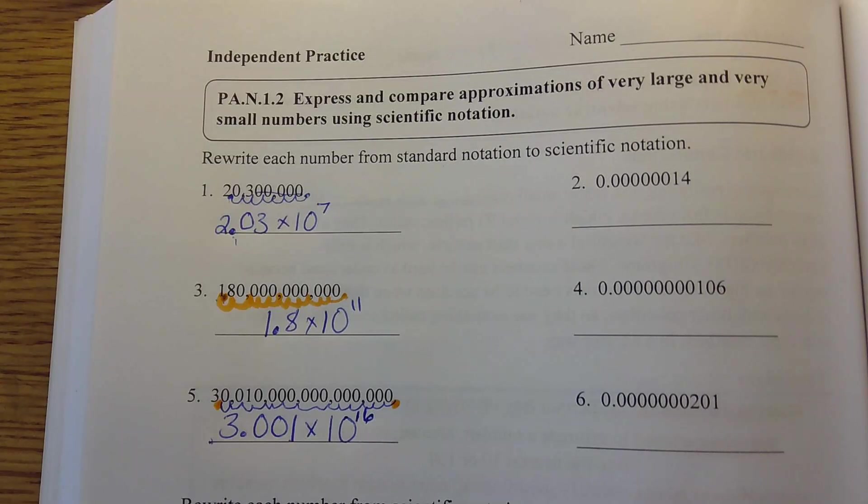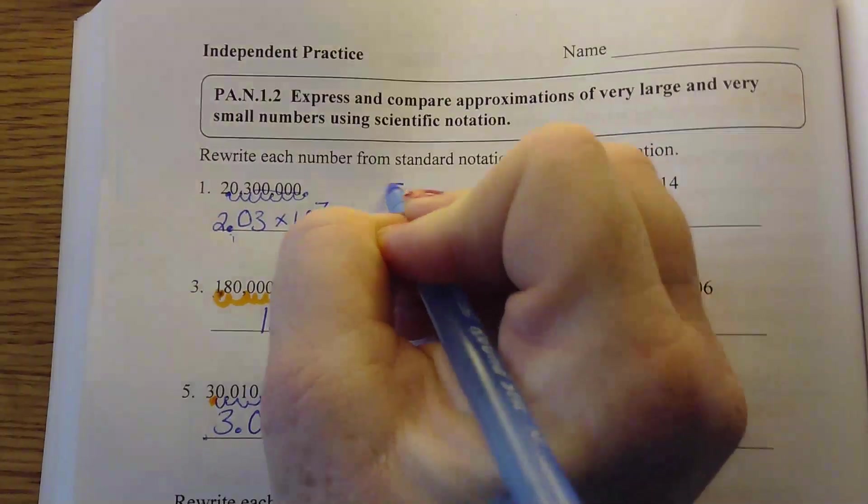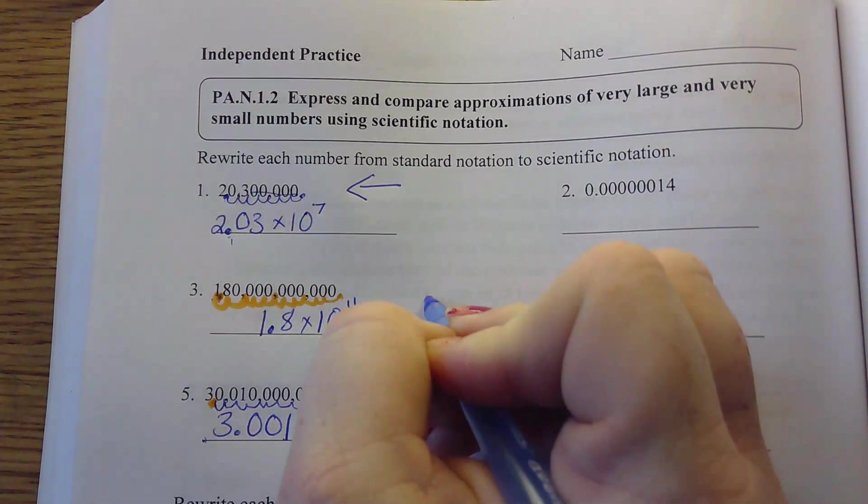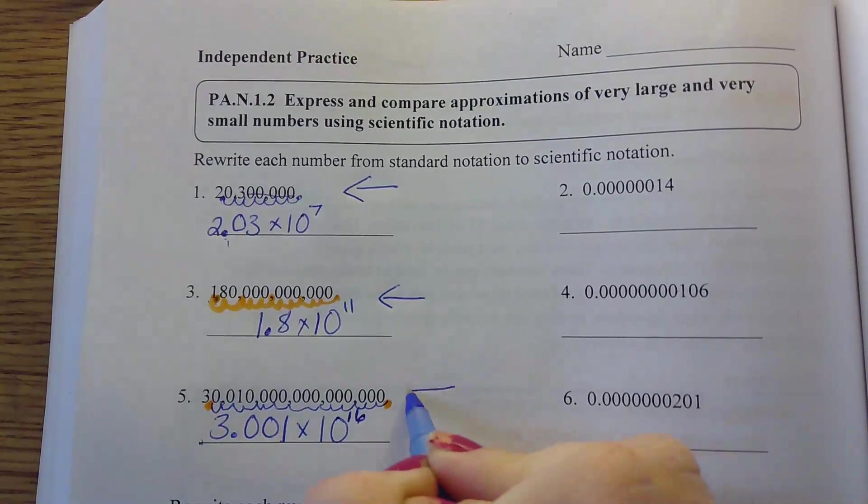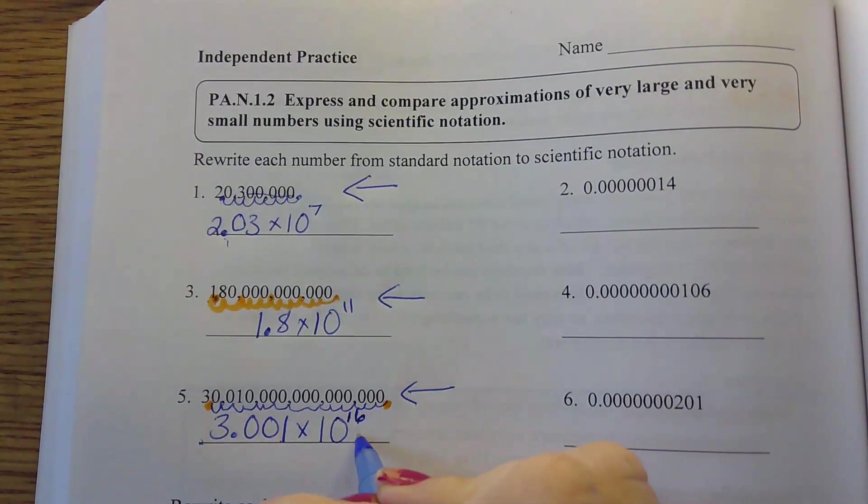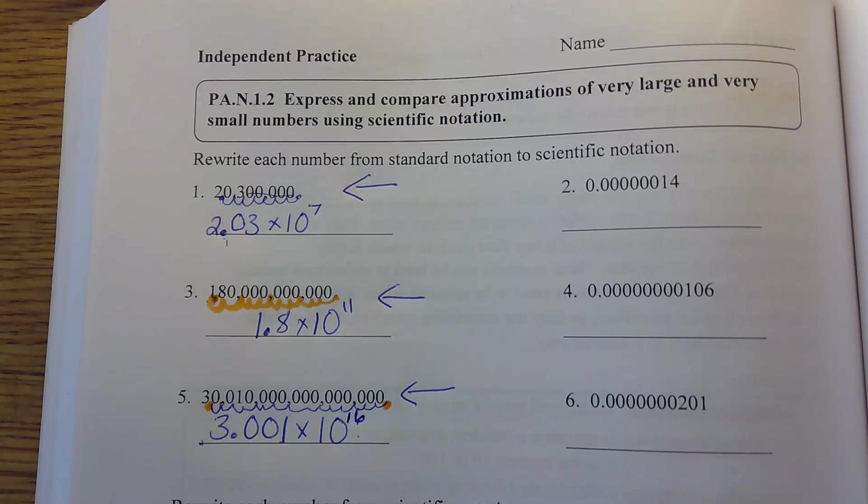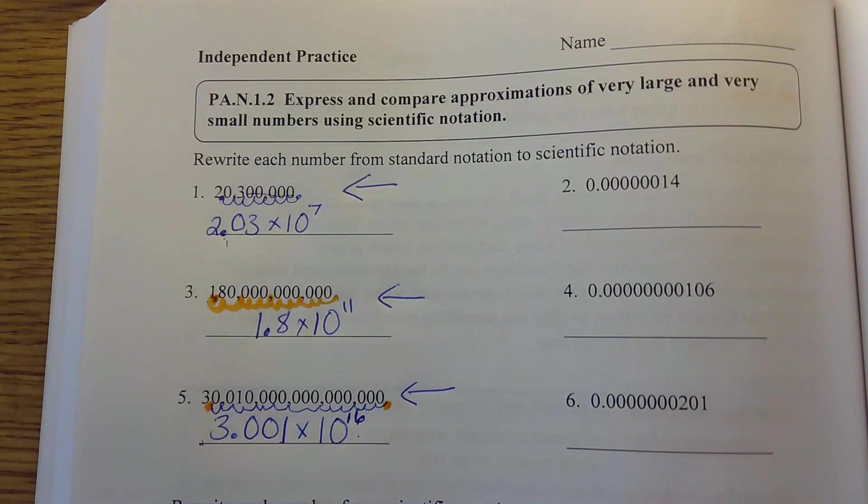Notice on each of these that my decimal, when I moved it, I was going from right to left. And all of my exponents are positive. We wrote this in our notes last week.